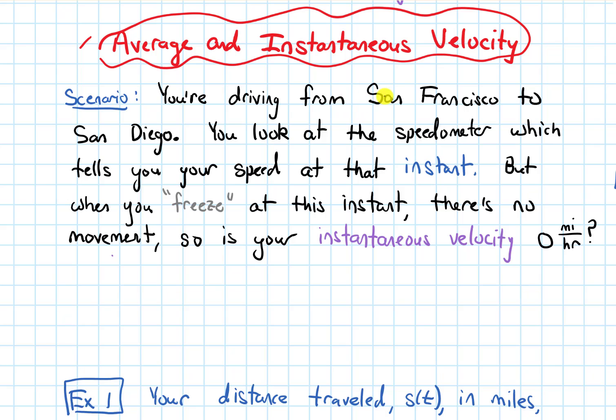You're driving from San Francisco to San Diego. You look at the speedometer, which tells you your speed at that instant. But when you freeze at this instant, there's no movement. So does that mean that your instantaneous velocity or your velocity right at that particular instant is just zero miles an hour?